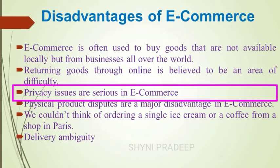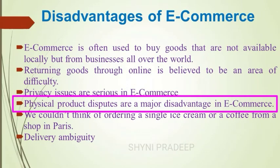Privacy issues are serious in e-commerce — you have to enter your personal information on the website, and many companies misuse that information. Physical product disputes are a major disadvantage — we do not have physical access to the product; there is only visual and auditory information. For example, we can see pictures of perfumes but cannot smell their fragrance, and we can see pictures of clothes but cannot check their quality.